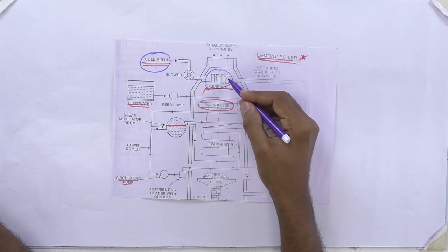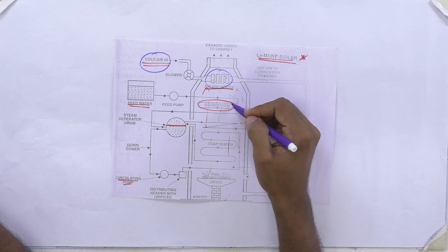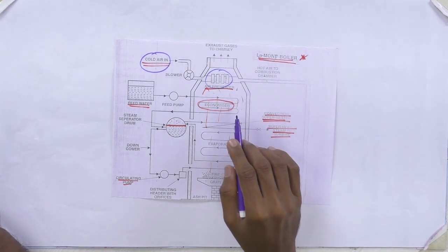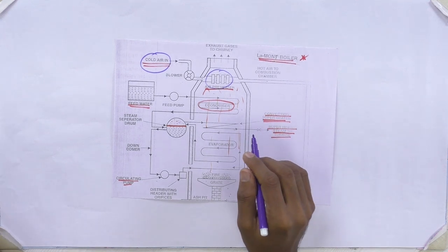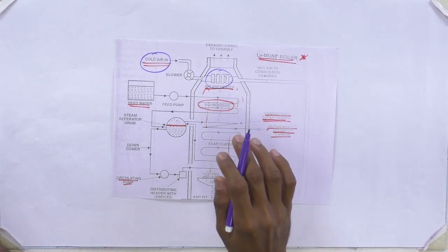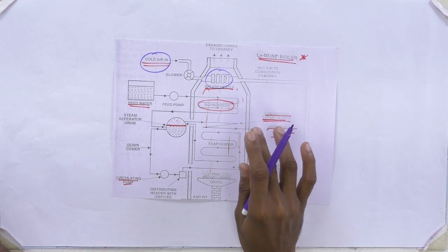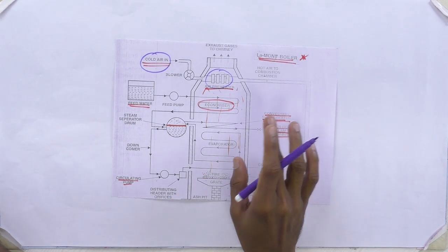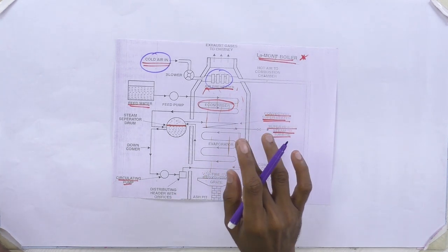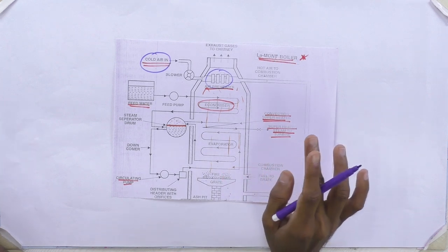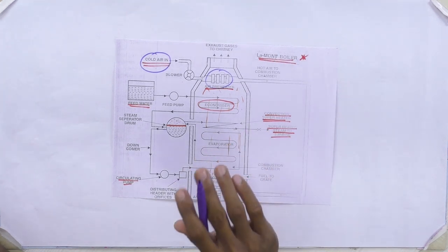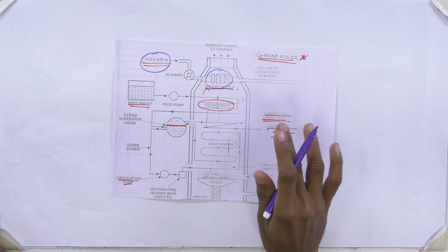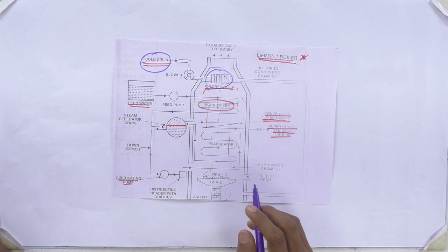The main accessories are the air preheater, economizer, and superheater — these are all accessories very important for increasing the efficiency of the boiler. At the same time, we should not forget about the mountings. Without mountings, we should not run the boiler — it is the only way to run the boiler safely. The operator should take care of the mountings — that is very important.